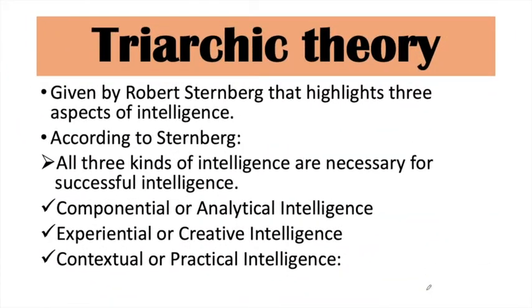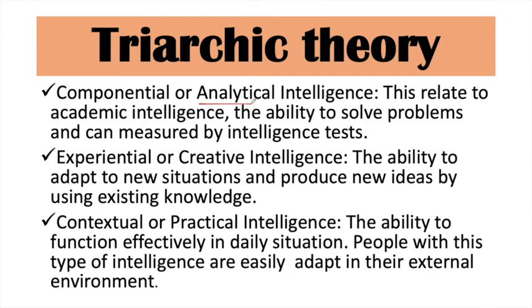Next is triarchic theory, given by Robert Sternberg. He highlighted three aspects of intelligence: number one is componential, number two is experiential, and number three is contextual. Componential intelligence is called analytical or academic intelligence, and it can be measured — we can judge a child's level of intelligence through it.